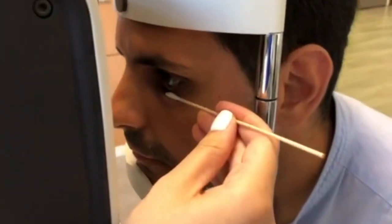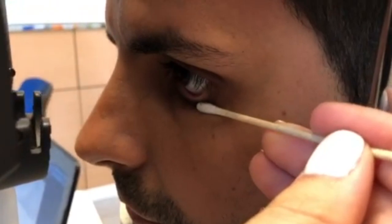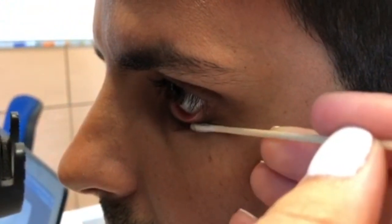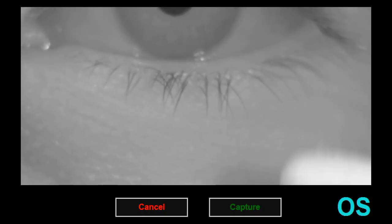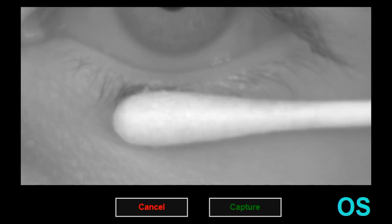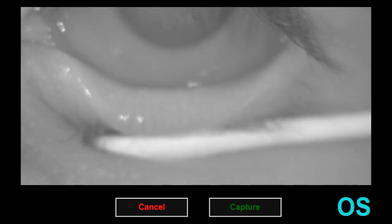With a Q-tip or cotton swab, invert the patient's bottom eyelid to expose the gland. Place the cotton swab on the bottom lash line and gently pull downwards.